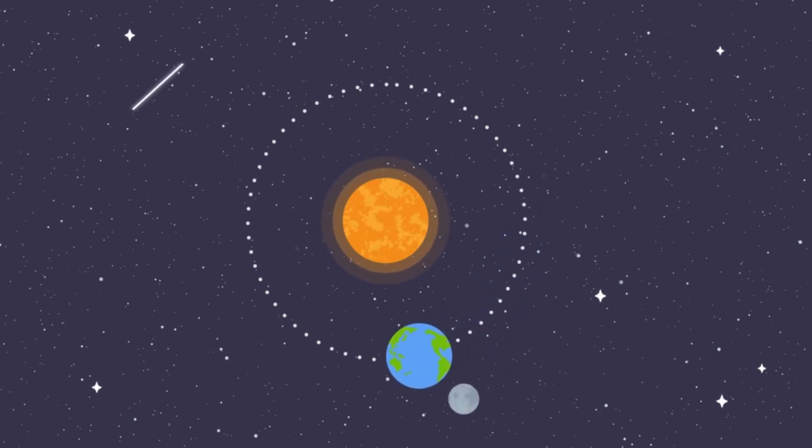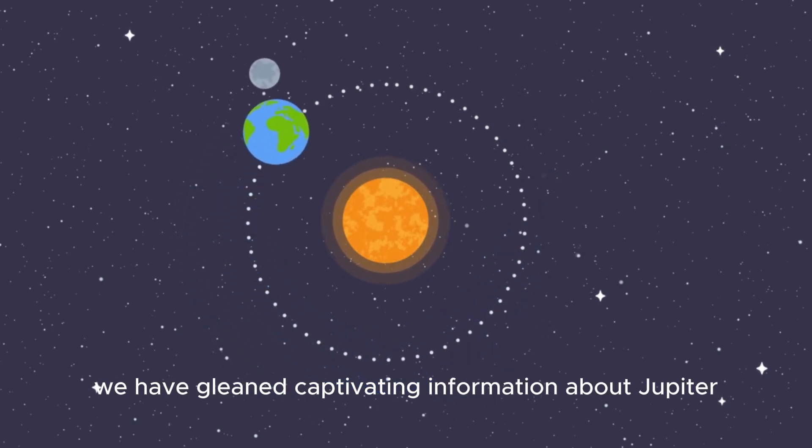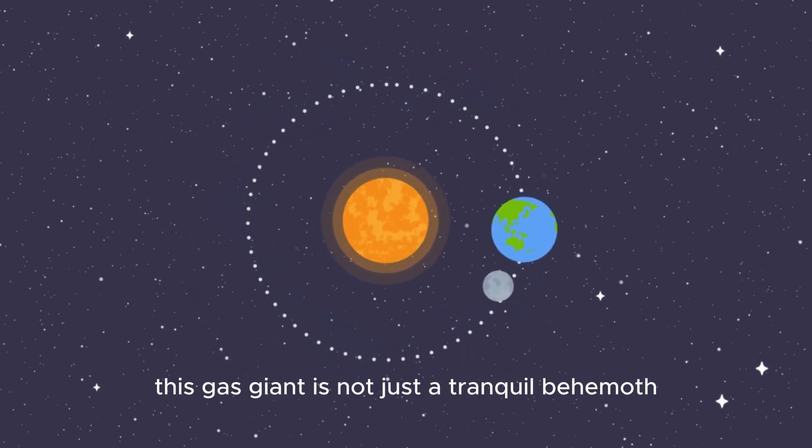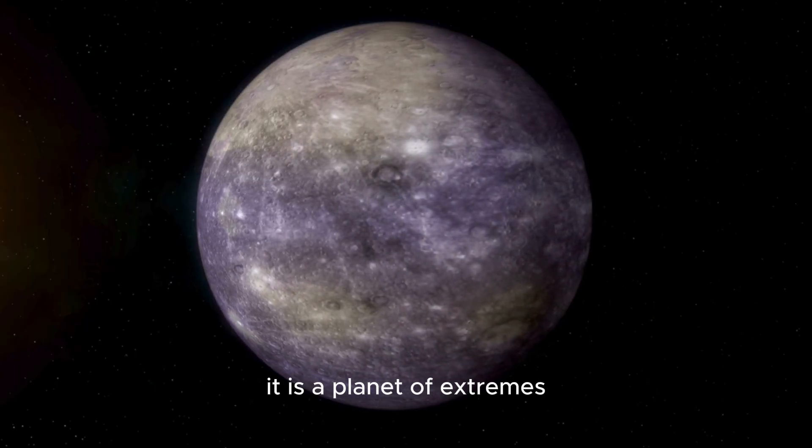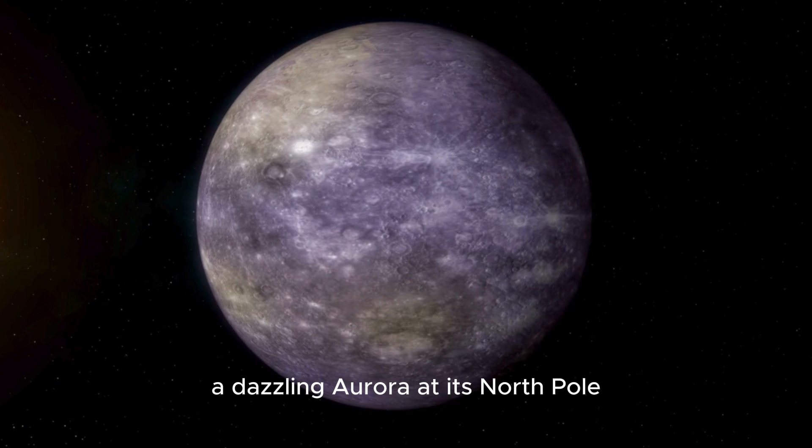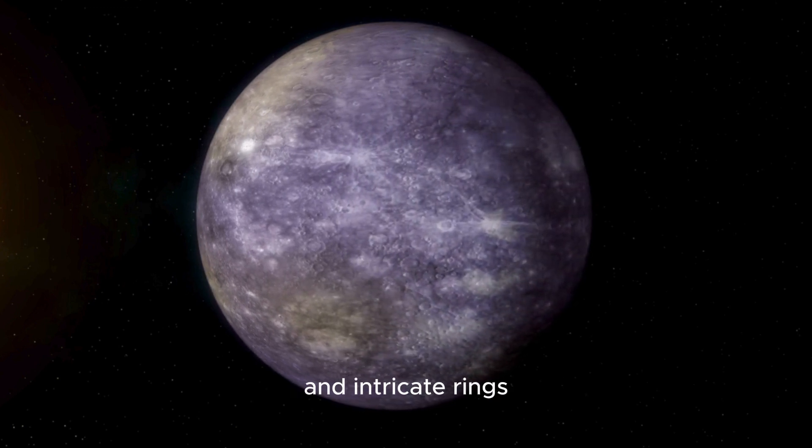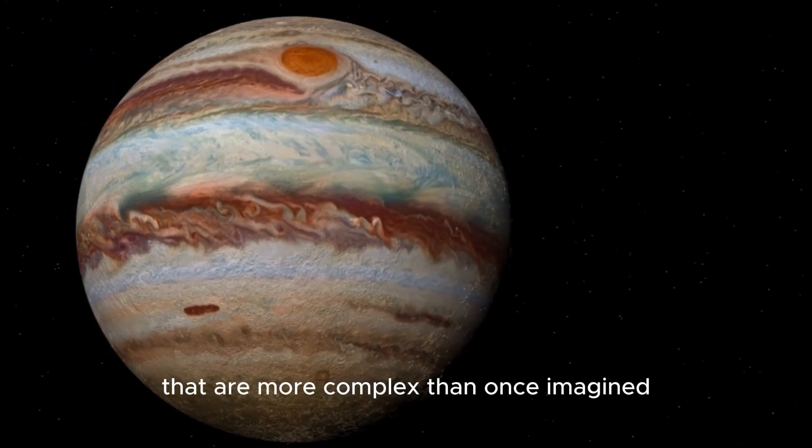Through the Voyager missions, we have gleaned captivating information about Jupiter. This gas giant is not just a tranquil behemoth. It is a planet of extremes, with ferocious storms, a dazzling aurora at its north pole, and intricate rings that are more complex than once imagined.